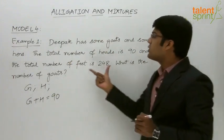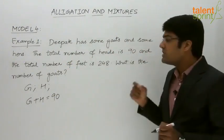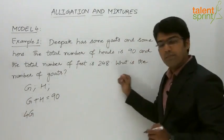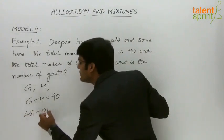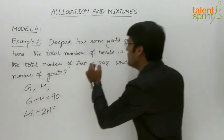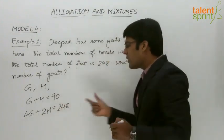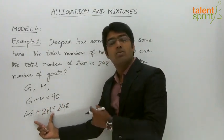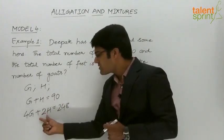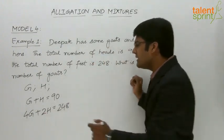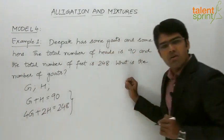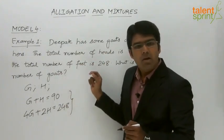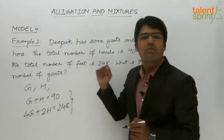We also know the total number of feet is 248. Each goat has 4 feet, so 4g, and each hen has 2 feet, so 2h, giving us 4g plus 2h equals 248. These two linear equations in two unknowns can be solved to find the number of goats — that is the straightforward method.